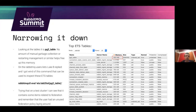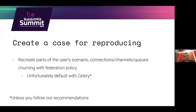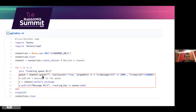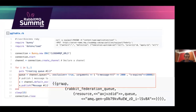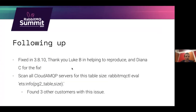This user had a federation policy applied to their queues. They were also using Celery, which has default options that automatically create and destroy queues — not good when combined with a federation policy. The reproducing code is very easy: it just creates queues, expires messages, expires the queue, and repeats. Together with a federation policy, this caused entries to be added repeatedly in the PG2 table.